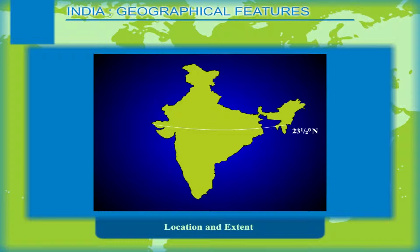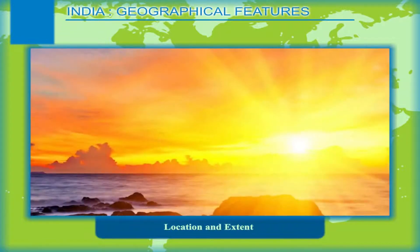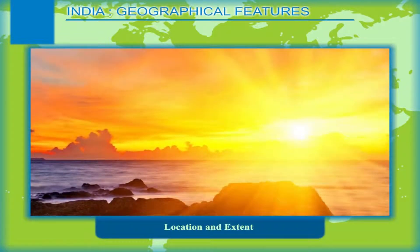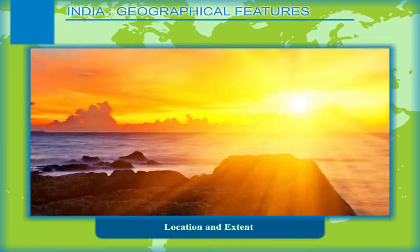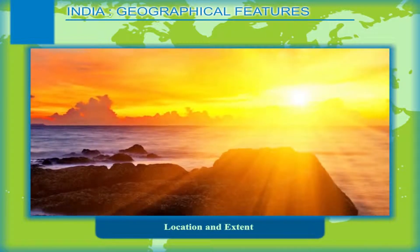The Tropic of Cancer, at 23.5 degrees north latitude, divides India into almost two equal halves. The longitude 82.5 degrees east, which lies almost in the center of India, is its standard meridian. The Indian Standard Time, or IST, is based on the position of the overhead sun at this longitude.